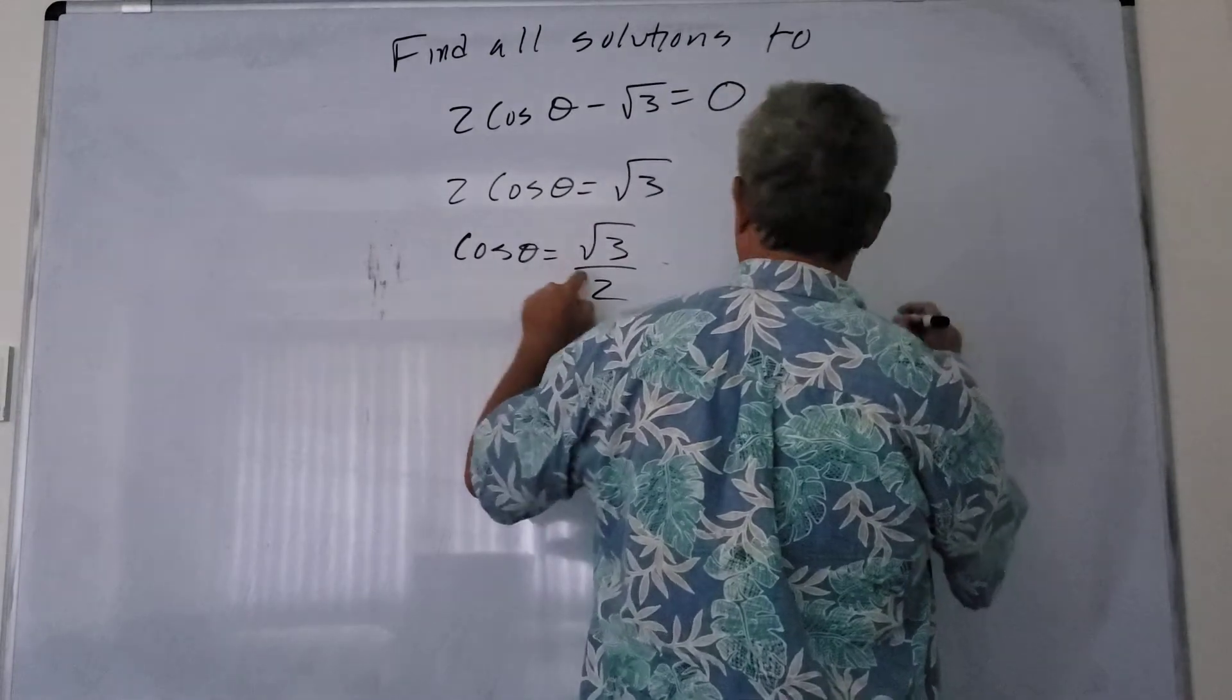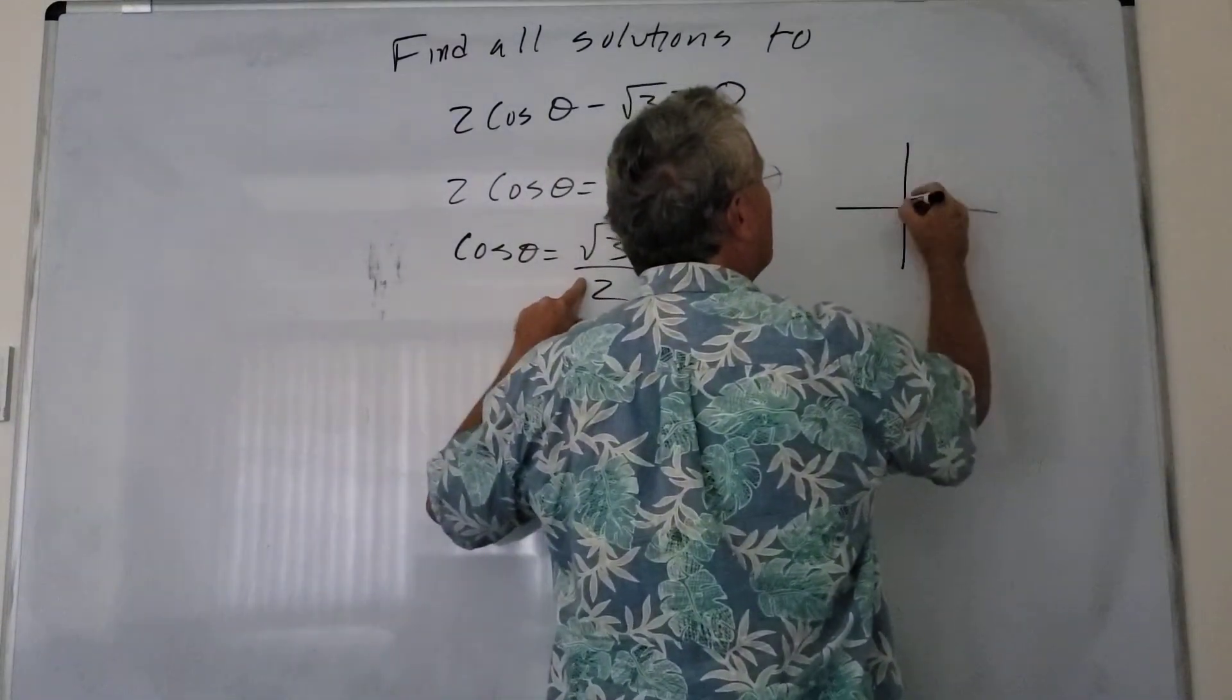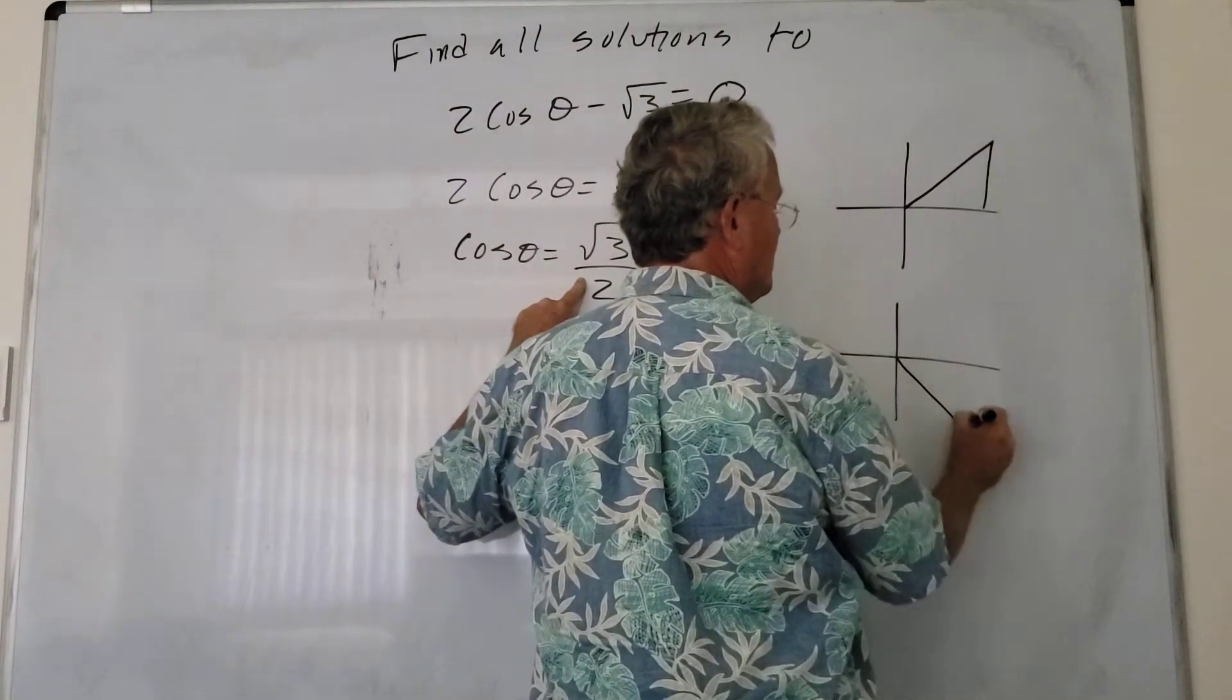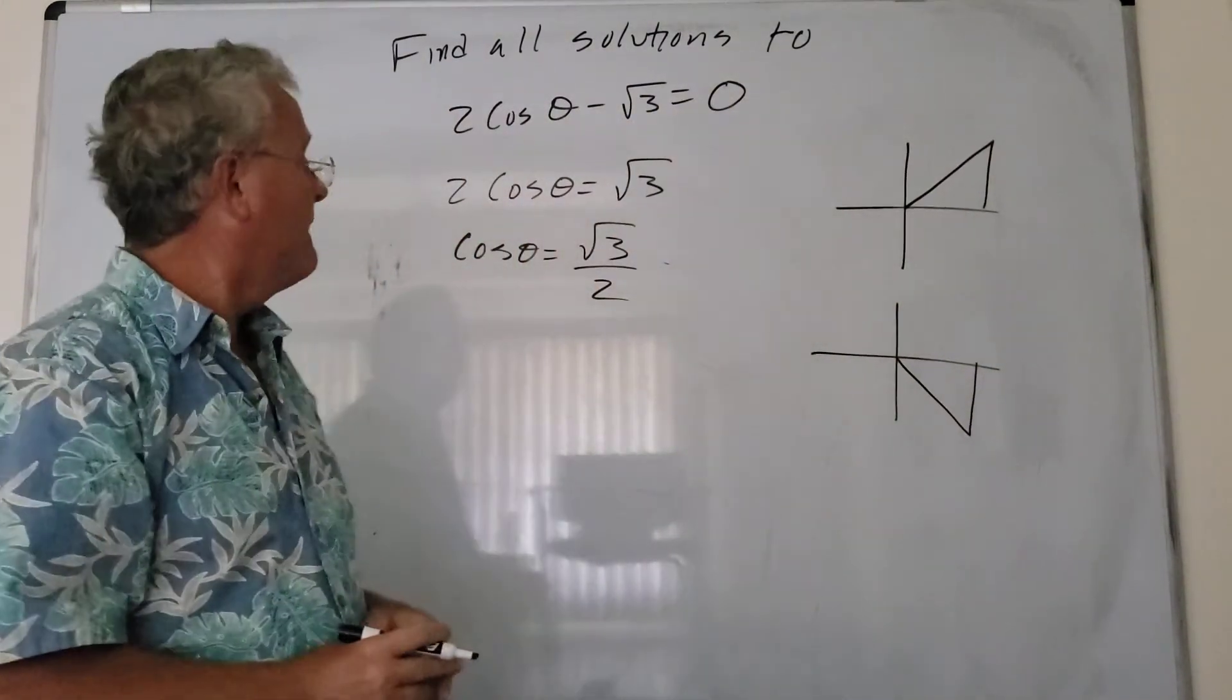So because this is positive, you want to draw a reference triangle in the first quadrant and a reference triangle in the fourth quadrant.